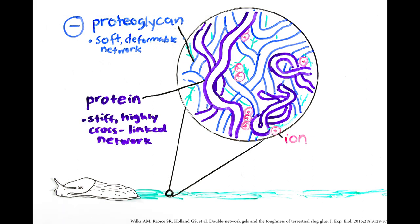The proteins form a stiff, highly cross-linked network with a net positive charge. Electrostatic attractions between the positively charged proteins and the negatively charged proteoglycans, in addition to the double network containing both highly linked and deformable substances, give the slime its strength.